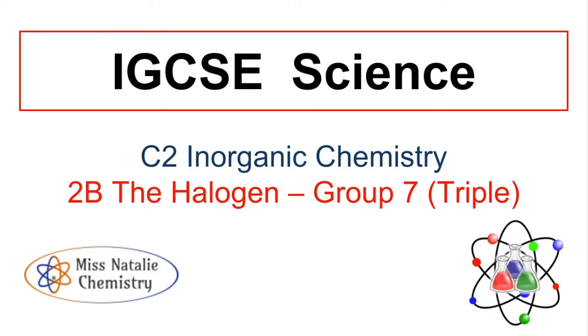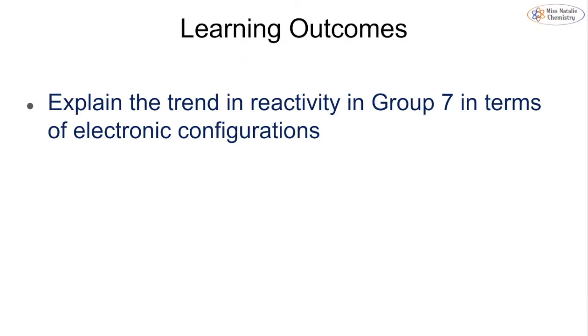In this video we're going to be looking at topic 2B, which is the halogens and Group 7 of the periodic table, as part of the IGCSE chemistry course for Edexcel. We're going to be looking at the triple outcome for this topic, so the outcome for triple is to be able to explain the trend and reactivity in Group 7 in terms of electronic configurations. This is very much the same as the outcome for the alkali metals, we're just looking at the halogens this time.